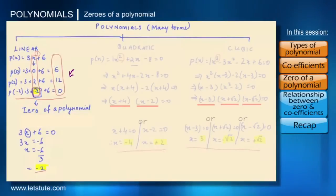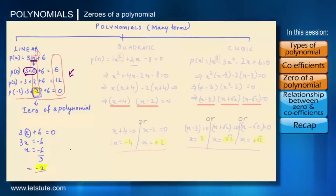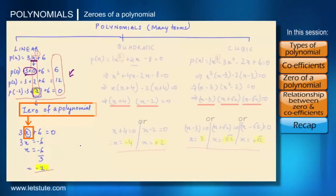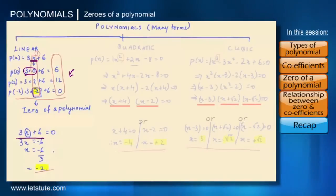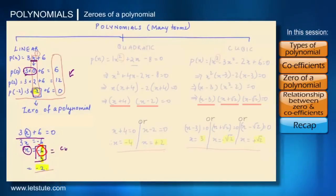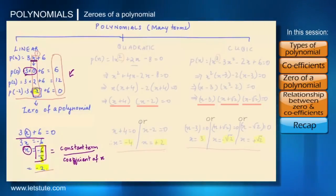The value of the polynomial depends on its variable, and in the same way it will also depend on the coefficients because the variables and the coefficients are multiplied. So we can say there is a kind of relationship that exists between the zeros of a polynomial and the coefficients. When finding the zeros for the linear polynomial 3x plus 6, we got the variable in terms of its coefficients. Here 6 is the constant term and 3 is the coefficient of x. The constant term is 6 and we got minus 6, so it is minus of the constant term upon the coefficient of x.